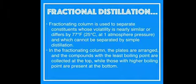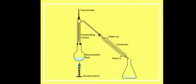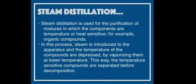Next is fractional distillation. Fractionating columns are used to separate constituents of volatile substances that are nearly similar or differ by 77 degrees Fahrenheit, which cannot be separated by simple distillation. A fractionating column is used for different boiling points of substances. In this process, the liquid is separated by boiling point as vapors rise up and then collect through the condenser.